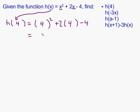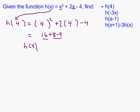Simplifying gives: 4 squared is 16, and 2 times 4 is 8, and then you subtract 4 at the end. 8 minus 4 is 4, then add the 16 and you get 20. So the question is to find h of 4, and the answer is simply 20. This means if you plug 4 in as an input into the function h, the output is 20.